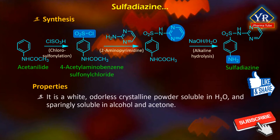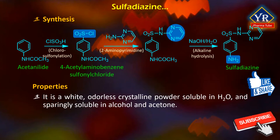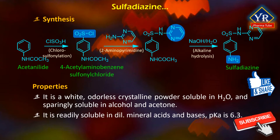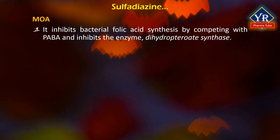Sulfadiazine is a white odorless crystalline powder soluble in water and sparingly soluble in alcohol and acetone. It is readily soluble in dilute mineral acids and bases. Its pKa is 6.3. Similar to other sulfonamides, sulfadiazine inhibits bacterial folic acid synthesis by competing with PABA. It works by inhibiting the enzyme dihydropteroate synthase.